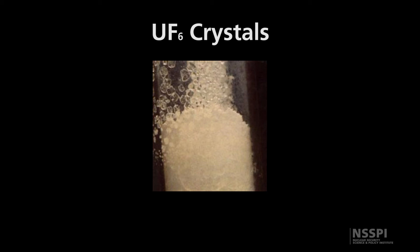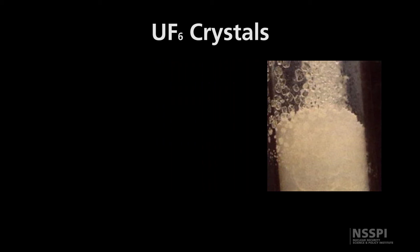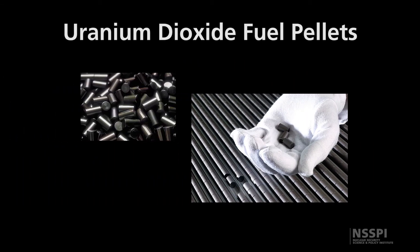That uranium hexafluoride then, after enrichment, could get turned into uranium dioxide, which is the principal form of uranium that we see as nuclear fuel in reactors. And uranium dioxide is a dark-colored ceramic. These particular pellets—these aren't just scale, these are blown up—but you'd expect them to have a diameter that is similar to the diameter of my pinky.